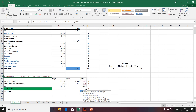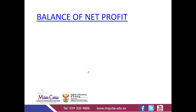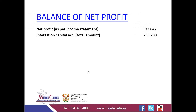Without wasting any time, I'd like to go to the slide focusing on the determination of the balance of profit. As emphasized, we never share the net profit directly from the income statement, but adjust it by other items appearing on the appropriation statement as per the partnership provisions. You begin by taking the net profit from the income statement, then take the total interest on capital and minus it from the net profit.